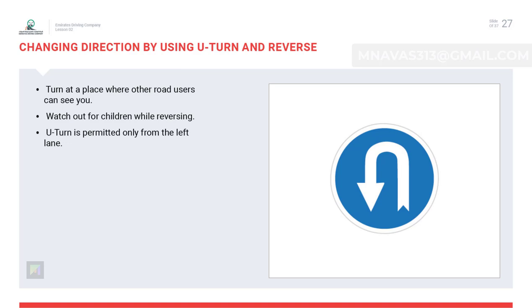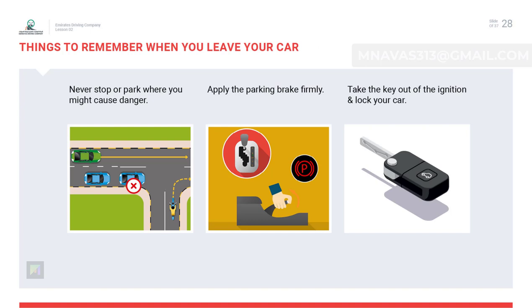Changing direction using U-turns and reverse: a U-turn in one-way traffic must be made from the extreme left lane only. If you are driving in two-way traffic and want to change direction, you can reverse your car. When you leave your car, ensure it is parked at a proper parking place.